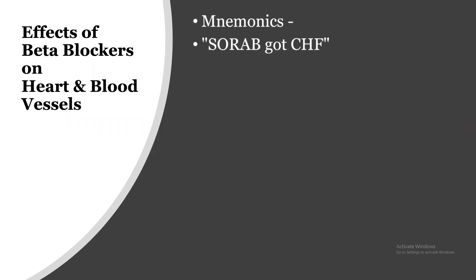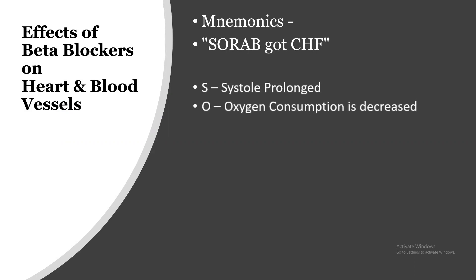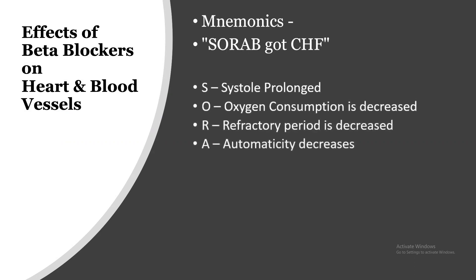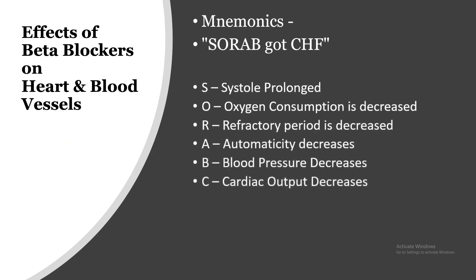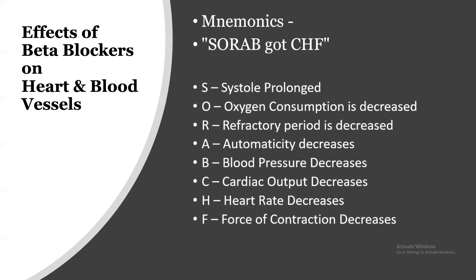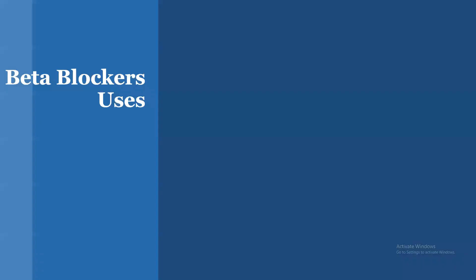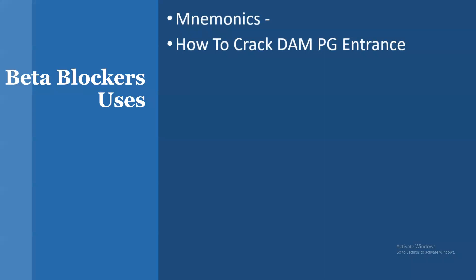The effects of beta blockers on the heart and blood vessels can be remembered with 'SORAB got CHF': S — systole is prolonged, O — oxygen consumption decreased, R — refractory period decreased, A — automaticity decreases, B — blood pressure decreases, and additionally cardiac output decreases, heart rate decreases, and force of contraction decreases.